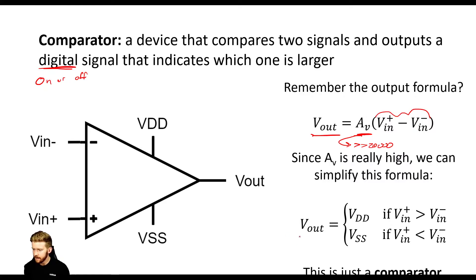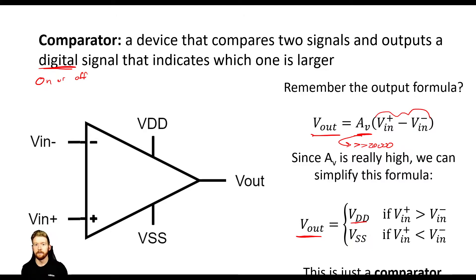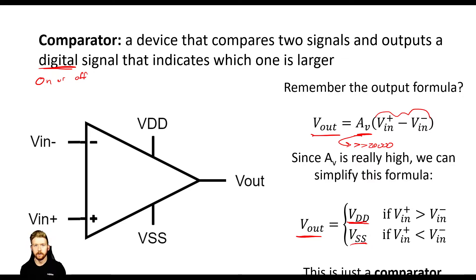We can say V_out equals Vdd if V_in_plus is greater than V_in_minus, even if just by a little bit. Remember, this gain is so large that a one millivolt difference creates a 20-volt difference on the output, so we'll hit the rail almost immediately. On the opposite side, if V_in_plus is less than V_in_minus, we're going to hit Vss. So there are only two signals our output can take — it can either be Vdd or Vss. Because of this, this is our digital signal, and we're actually comparing the two inputs. This is the very foundation of a comparator.